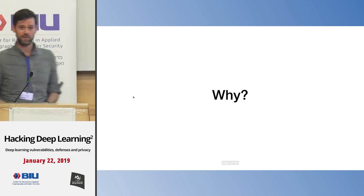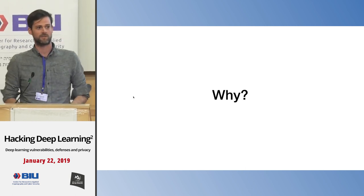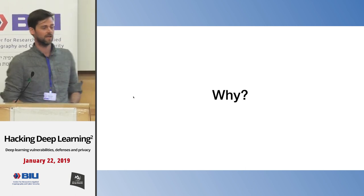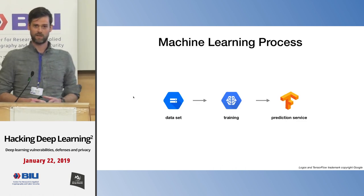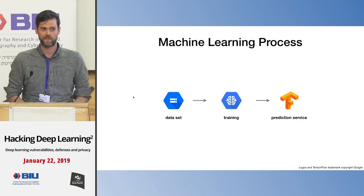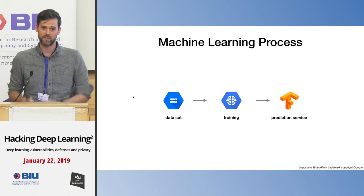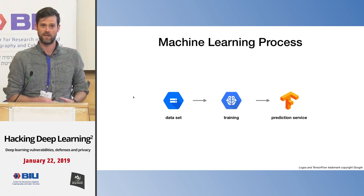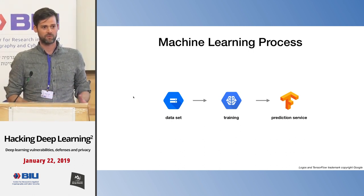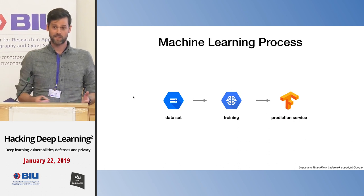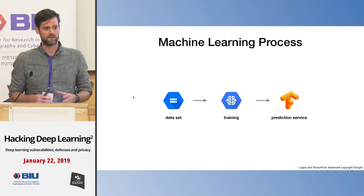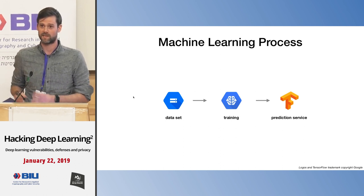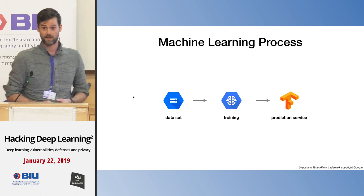The first question is, as always, why? Why is this interesting to look at privacy-preserving machine learning? One way of framing that is to look at what a typical machine learning process might look like. Coming from a company, for instance, that would like to build a service they can offer to clients. They would start with a dataset, run it through a training process, and end up with a model they can offer as a prediction service.